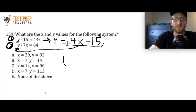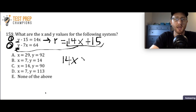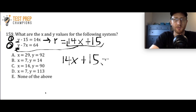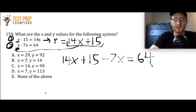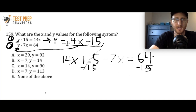I know this can be really confusing, so let me show you. I'm going to rewrite equation 2, but instead of writing y, I'll write 14x plus 15. So I have: 14x plus 15 minus 7x equals 64. Now, I'm going to subtract 15 from both sides, so the 15s cancel out, and I'm left with 14x minus 7x equals 49.